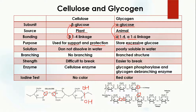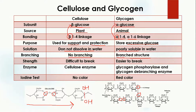Cellulose does not dissolve in water, while glycogen is poorly dissolved in water. There are no branches in cellulose — as you can see, it has a straight structure — because there is no 1-6 linkage present. In glycogen, a branched structure is present, and these branches are formed because of the 1-6 linkage.